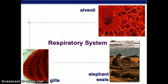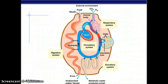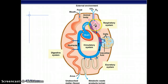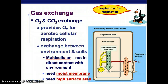This is the respiratory system, Chapter 42. We've got gills, alveoli, and seals as examples. Everyone breathes, and you can see all the different systems - circulatory, respiratory, excretory. The main point for respiration is gas exchange: an oxygen and carbon dioxide exchange with the blood.